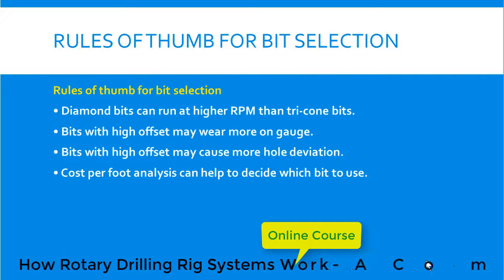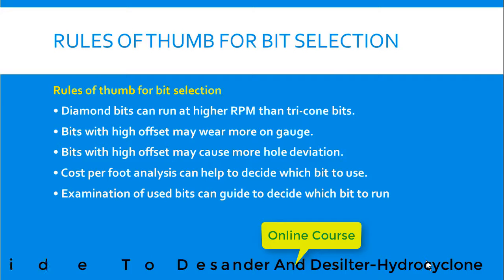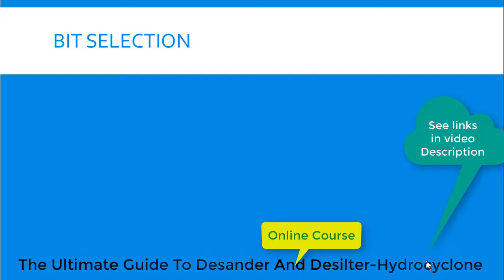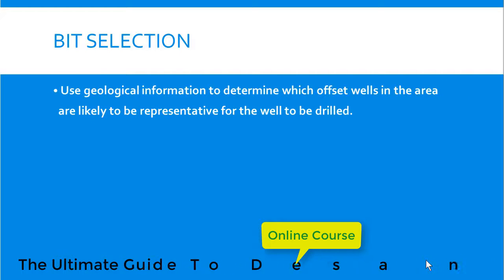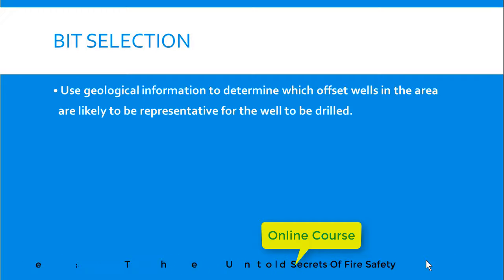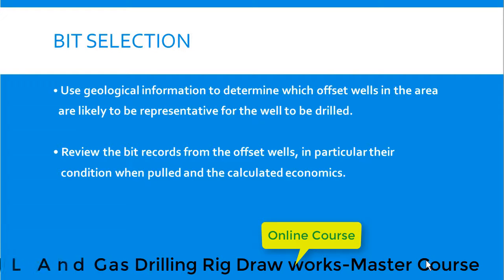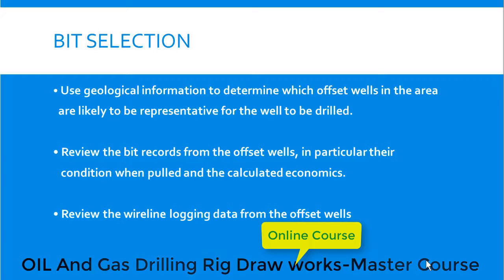Cost per foot analysis can help to decide which bit to use, and examination of used bits can guide which bit to run next. For appropriate bit selection, we can consider three things: first, geological information to determine which offset wells are most representative of the well to be drilled; second, review the bit reports from offset wells, including their bit dull grading and calculated economics; and third, review the wireline logging data from offset wells.